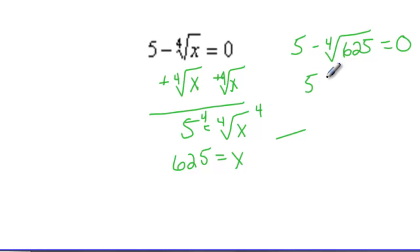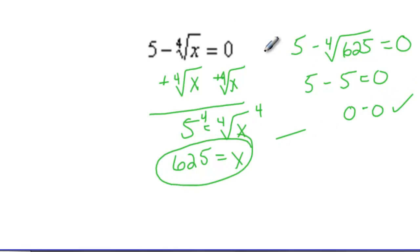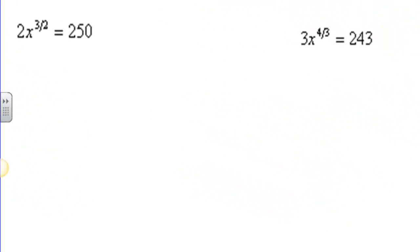5 minus 5 equals 0, 0 equals 0 — so we're good to go. There's our answer: x equals 625. Let's move on to some other ones.